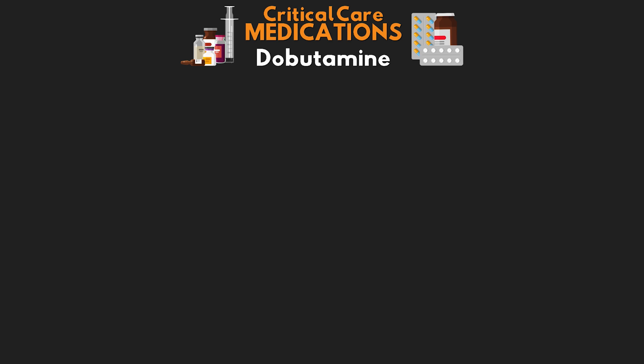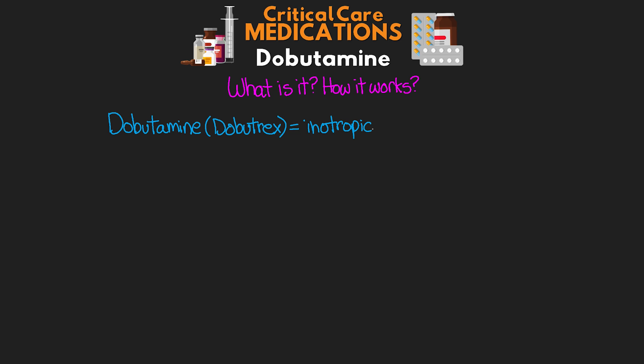Dobutamine is a commonly used medication, but it is also commonly misunderstood. It can play an important role in the treatment of our critically ill patients, so it's important that you understand how it works and why we use it. Dobutamine, which also goes by the name Dobutrex, is classified as an inotropic agent, which means that it increases cardiac output.